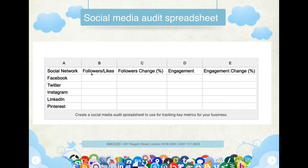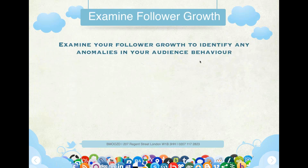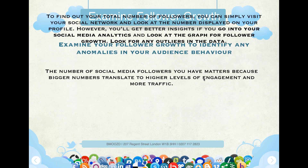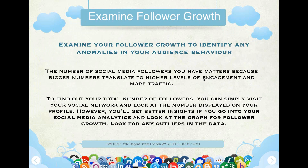Column A has your network, B your followers and likes, C your percentage of change, D your engagement, and E your engagement change percentage. We will examine your follower growth to identify any anomalies in audience behavior. The number of social media followers you have matters because bigger numbers translate to higher levels of engagement and more traffic. To find your total number of followers, you can simply visit your social network and look at the number displayed on your profile. However, you will get better insights if you go into your analytics and look at the graph for follower growth.